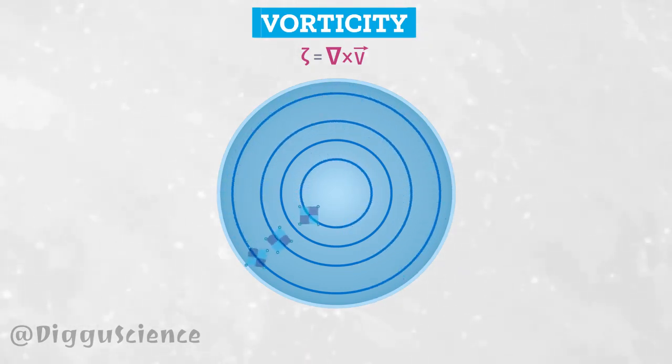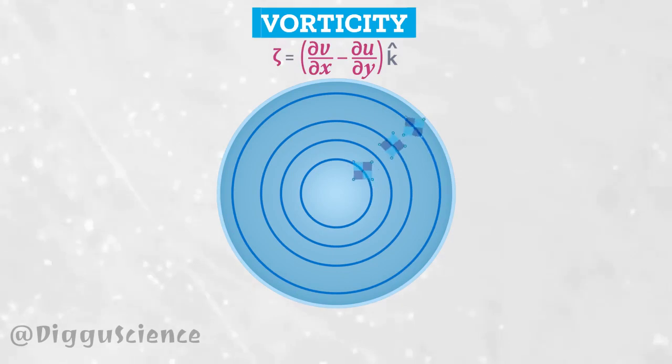If this plane is an xy plane, then zeta is equal to partial v partial x minus partial u partial y k hat.